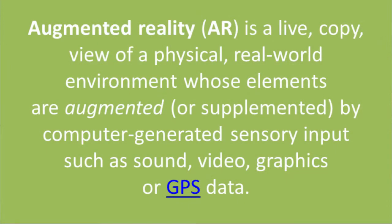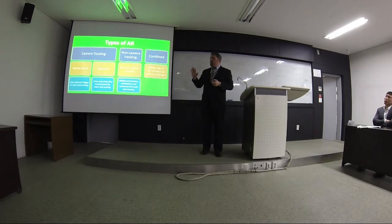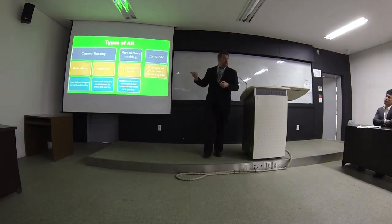According to Wikipedia, augmented reality is different from virtual reality. Virtual reality is a completely simulated environment. Augmented reality has to use something from the physical world around you — it could be an object or just where you are in the world. There are many different types, including camera tracking and non-camera tracking combined.